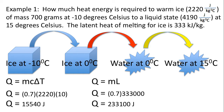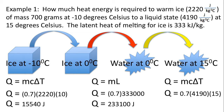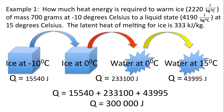Finally, we take the water at 0 degrees Celsius and warm it up to 15 degrees Celsius — again there is a change in temperature, so we use Q equals mc delta T. The mass is 0.7 kilograms, and this time we use the specific heat capacity of water: 4190 joules per kilogram degree Celsius. The temperature has risen by 15 degrees Celsius, from 0 to 15. Adding all three energies together, the total energy to one significant digit is 300,000 joules.